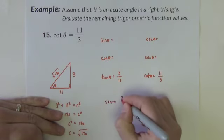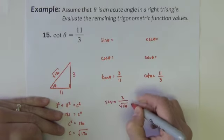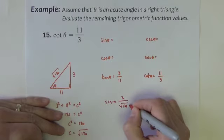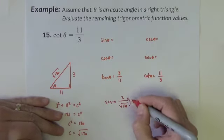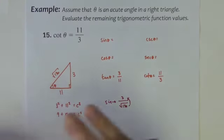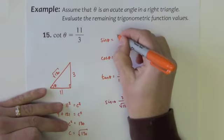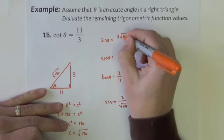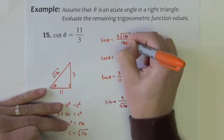the sine would be 3 over the square root of 130. I need to multiply the radical up to the top so the sine is going to be 3 square root of 130 divided by 130.